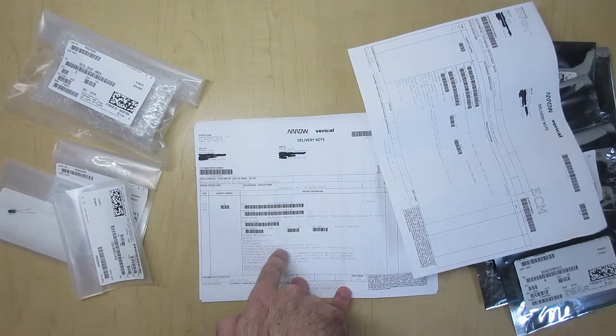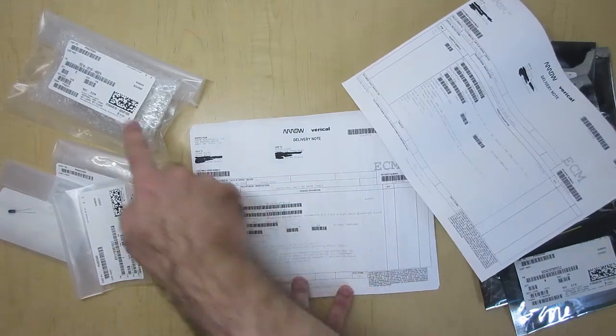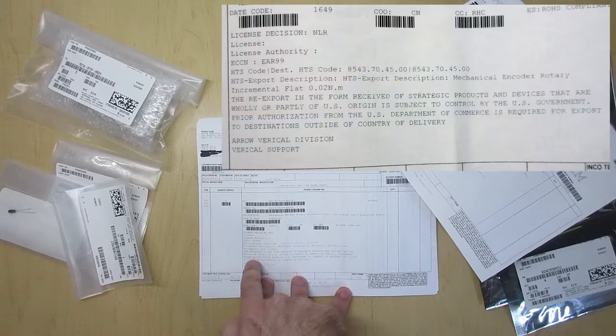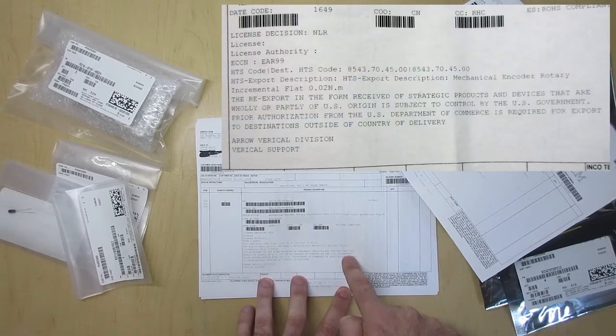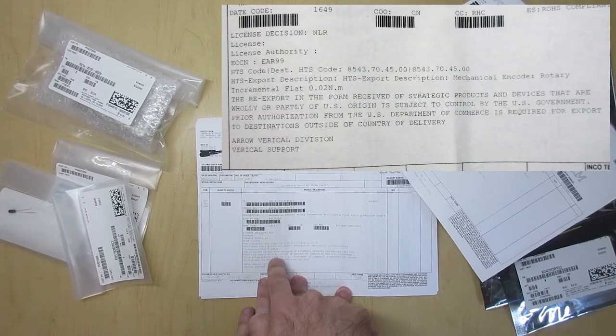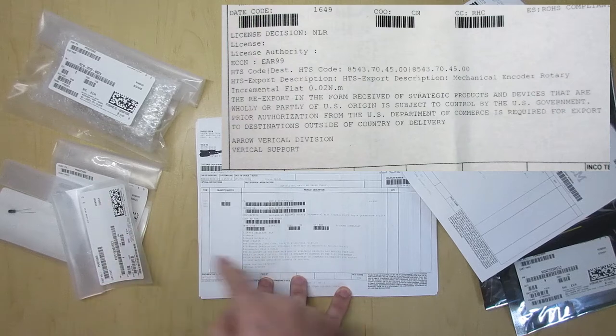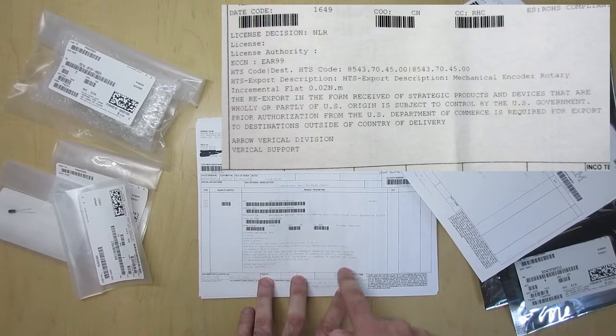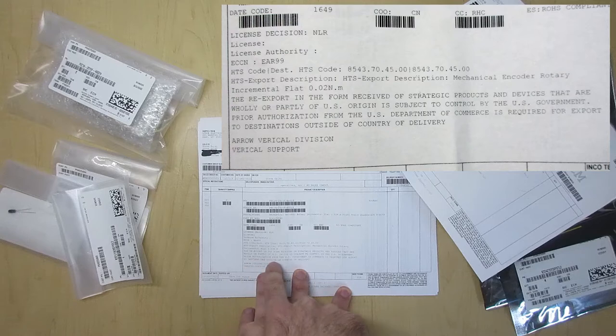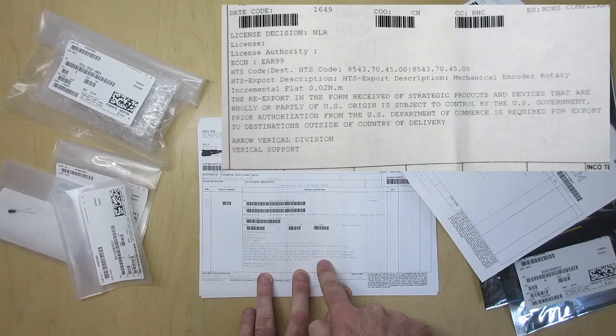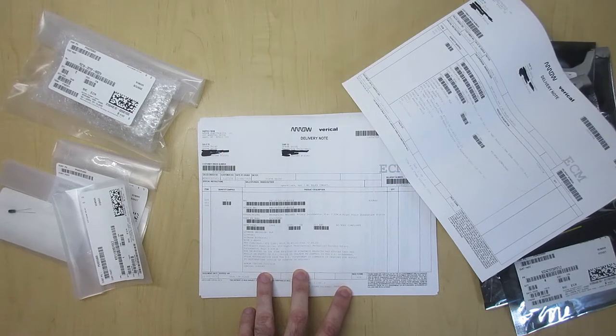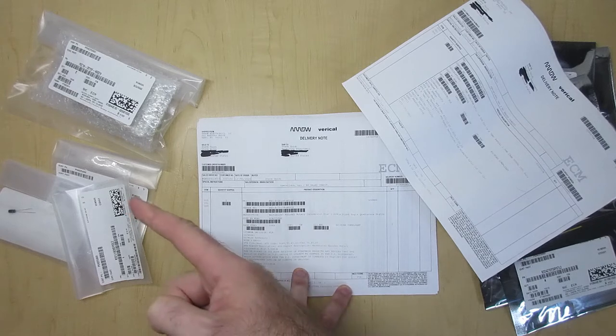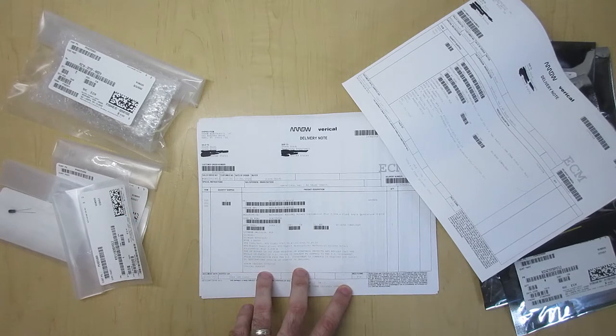The interesting thing that I noticed on here is that for these rotary encoders, there is an export restriction on them. So it looks like I'm not allowed to export those rotary encoders outside of the United States without prior authorization from the U.S. Department of Commerce. Are they really going to care if I send those things to Canada or Mexico? I don't know.